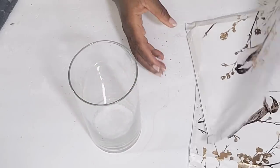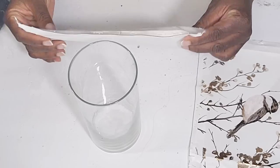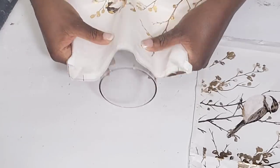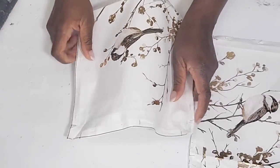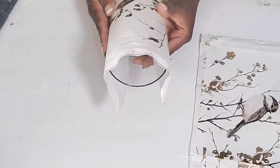I'm going to be using one of these round vases from the Dollar Tree. And what I'm pretty much going to be doing is first covering this vase. So I'm just lining up this canvas to see how much I need to cut off.